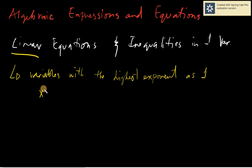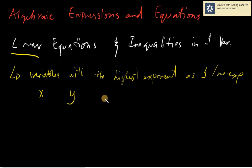Therefore, you will simply see variables like x with the exponent of one, or simply variables with no written exponent. By default, if there is no written exponent, it is just simply one. So you will be seeing variables like y, x, z, a, b, c, and so on. The highest exponent you will see is none written, and by default that is simply one — so that is a linear equation.